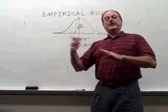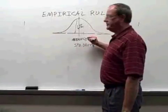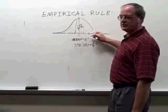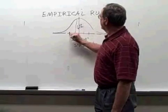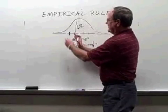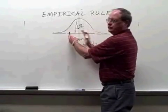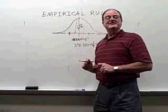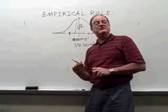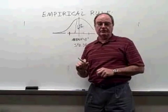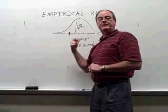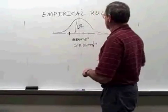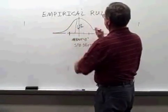If we go out another standard deviation on either side — in this example another quarter of an inch — that brings us to three and a half on the right and two and a half on the left. Now with a range of two and a half to three and a half inches, or two standard deviations on either side of the mean, the empirical rule says that will encompass 95 percent of all your data values — that is, 95 percent of all the lengths of blades of grass that I had cut and measured.